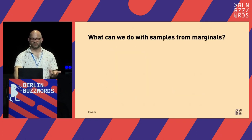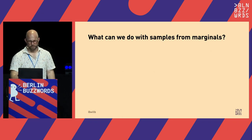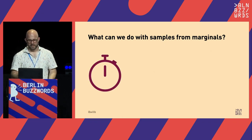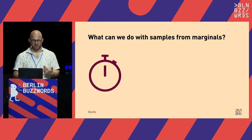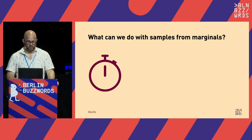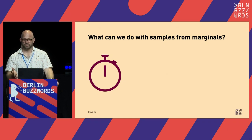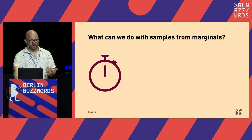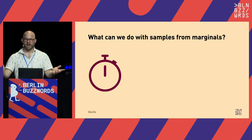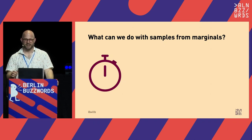If we just have these samples from marginals, what can we do that's interesting? One idea is to evaluate the throughput of things that process a single row at a time — inference services and stateless stream processors are examples. We could use these samples from marginals to fuzz test our machine learning systems, just give it a lot of unexpected inputs and see if it crashes or if we detect where it goes wrong.